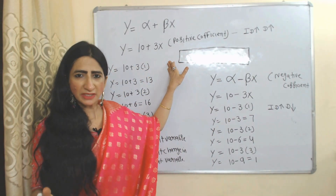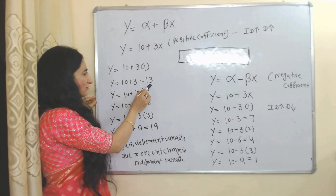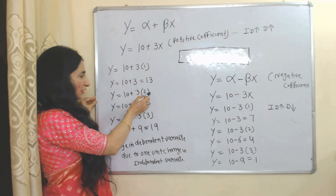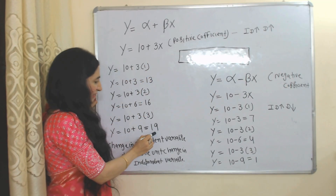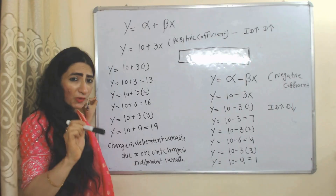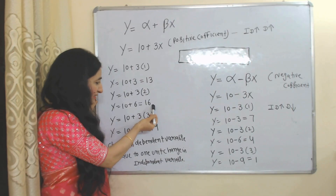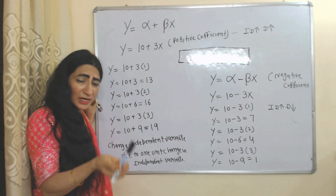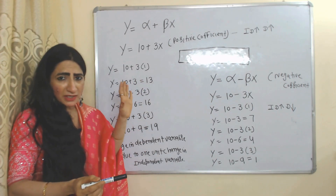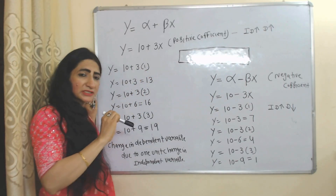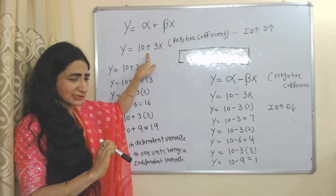A positive coefficient means when the independent variable increases, the dependent variable also increases. Suppose we put 1 in place of X, then Y will become 13. If we put 2 in place of X, then Y will become 16. If we put 3 in place of X, then Y will become 19. You can see that one unit increase in X leads to 3 unit increase in Y. Y is increasing from 13 to 16, and 16 to 19 — that's a 3 unit increase due to 1 unit increase in X. This value shows how much the dependent variable increases due to one unit increase in the independent variable. In the case of a positive coefficient, you will see a plus sign.